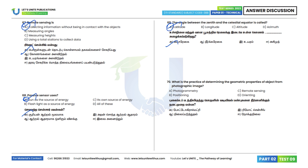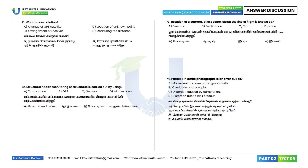Question 70: What is the practice of determining the geometric properties of objects from photographic images? The answer is photogrammetry. Option A. Question 71: What is a constellation? A constellation is an arrangement of GPS satellites. Option A is the correct answer.